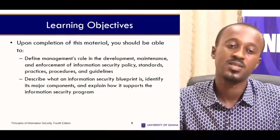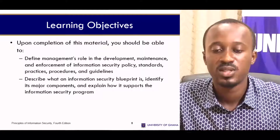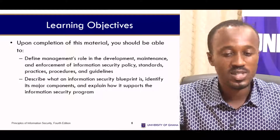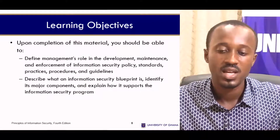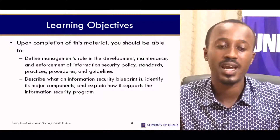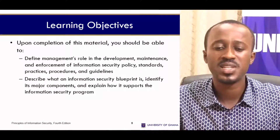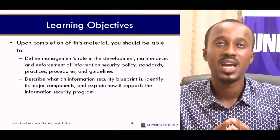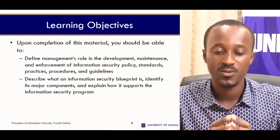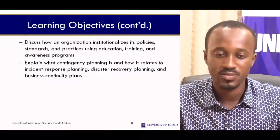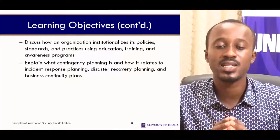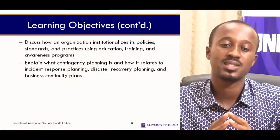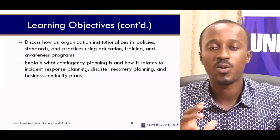As our learning objectives, upon completion of this session you should be able to determine management's role in the development, maintenance and enforcement of information security policies, standards, practices, procedures and guidelines. You should be able to describe what an information security blueprint is, identify its major components, and explain how it supports the information security program. Also, you should be able to discuss how an organization institutionalizes its policies standards and practices using education, training and awareness programs.